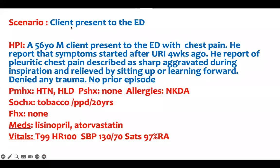As usual, when they give you a case, carefully find out the situation. If you make the diagnosis, the rest is history. A client presents to the emergency room — a 56-year-old male — with chest pain. He reports it started after an upper respiratory infection four weeks ago. The pain is pleuritic chest pain, associated with the pleura, described as sharp and aggravated during inspiration.